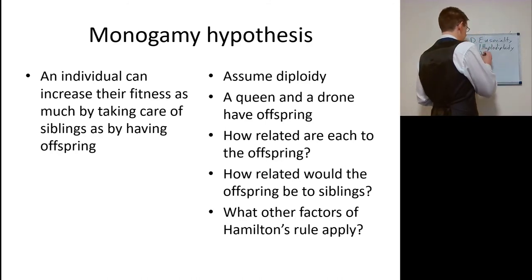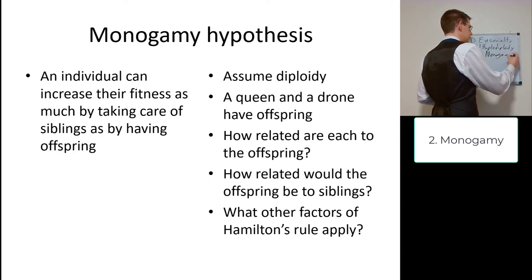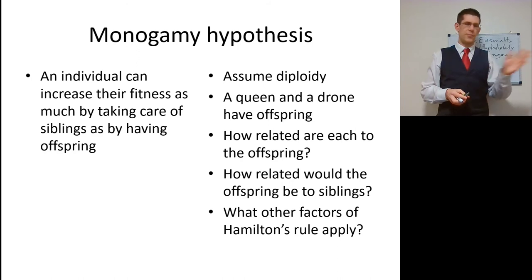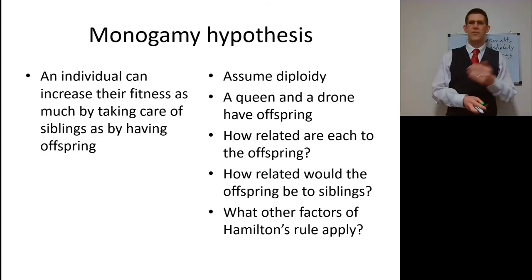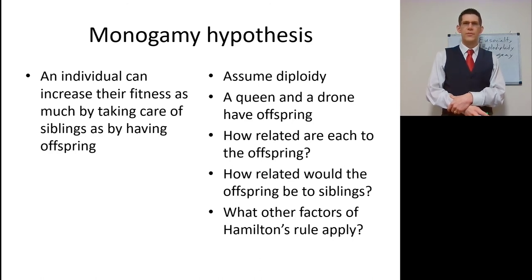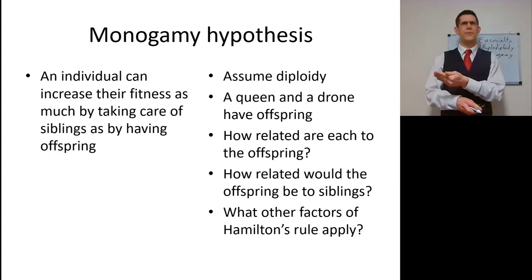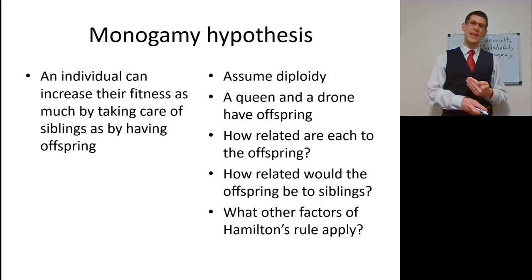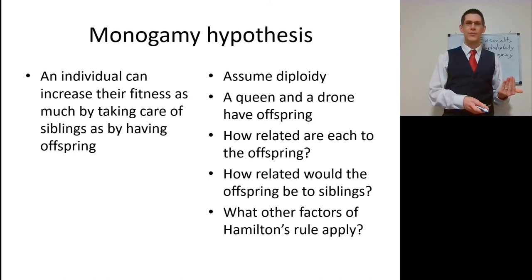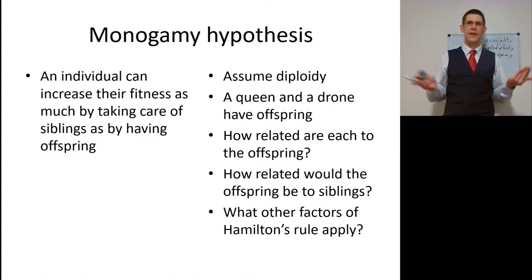Another hypothesis is the monogamy hypothesis. An individual can increase their fitness by taking care of siblings at 0.5 — as much as by having their own offspring at 0.5. Assuming diploid: a queen and a drone have offspring, each 50% related to each parent and 50% related to each other. Consider cost and benefit: if each individual in the hive is helping but not a lot, costs are low and relatedness is 0.5 — why not? It's easier to take care of your brother than to have a baby. It can be better to be part of a hive when living together for multiple generations, cooperating and caring for offspring. There's no reason not to be a sterile caste. Eusociality.